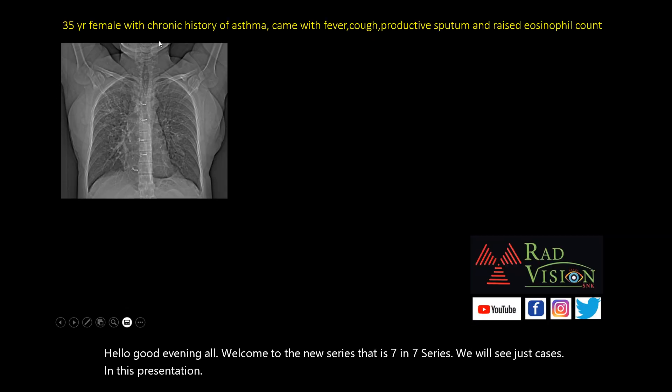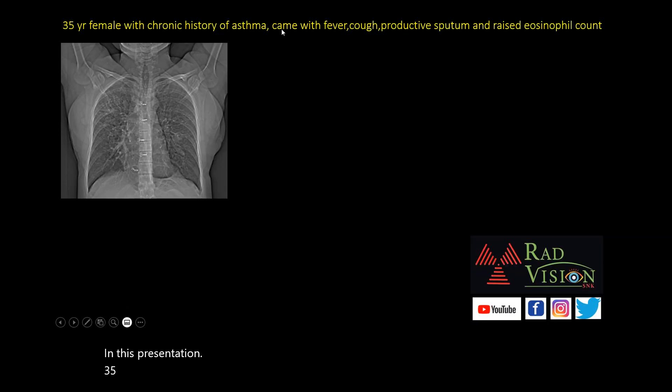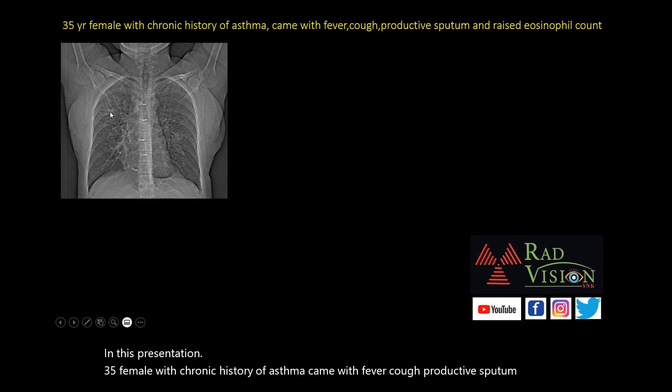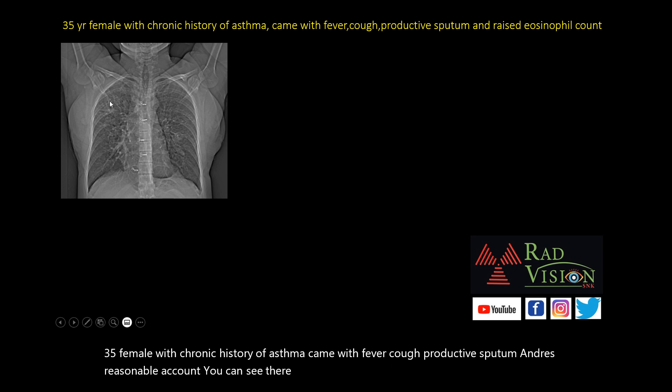Case 1: A 35-year-old female with a chronic history of asthma, came with fever, cough, productive sputum, and raised white cell count. You can see there are linear opacities in the right upper lobe and even prominent bronchovascular markings.